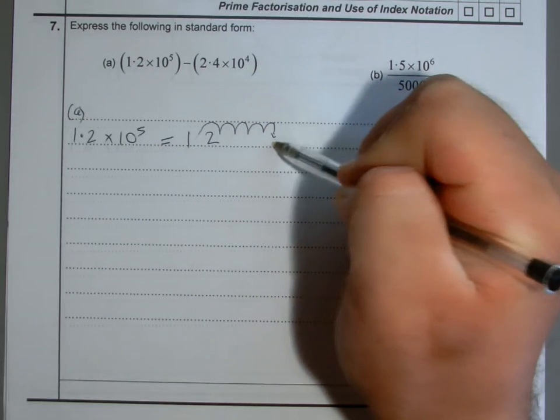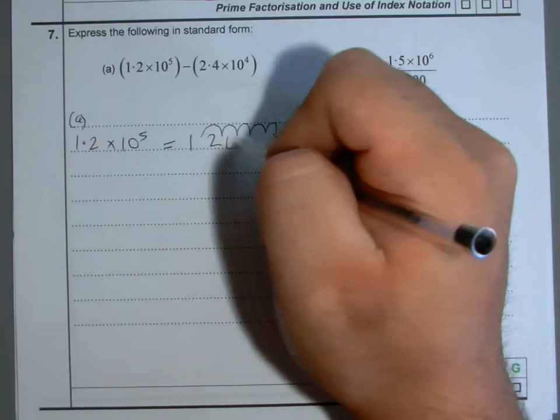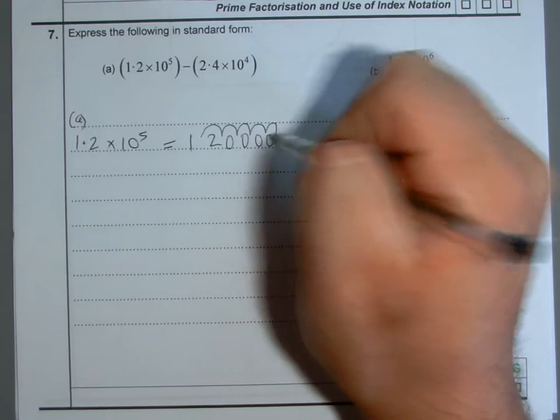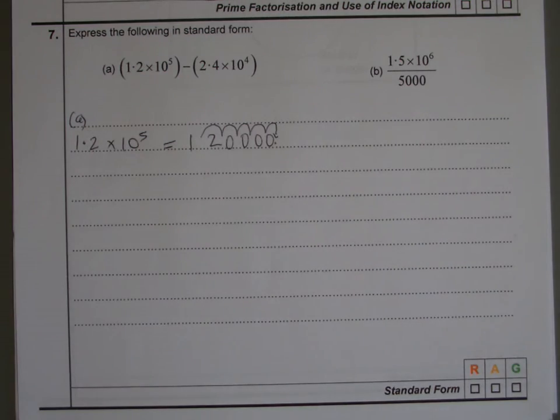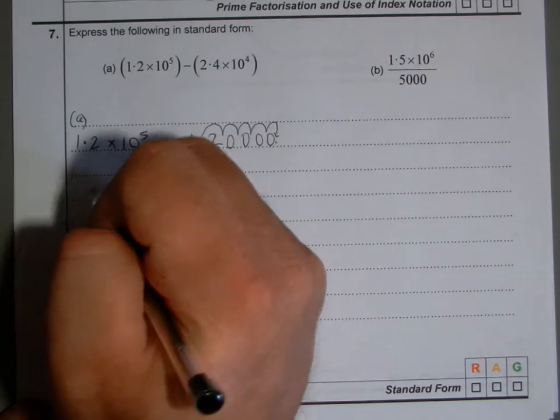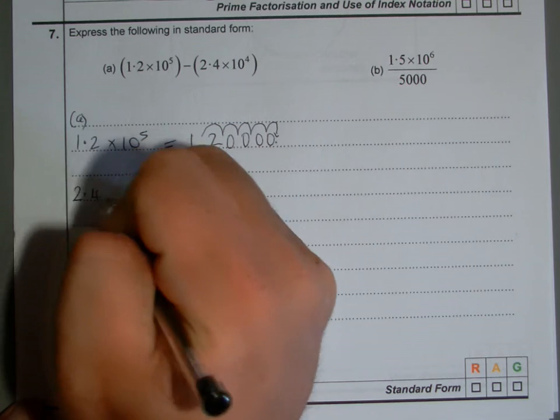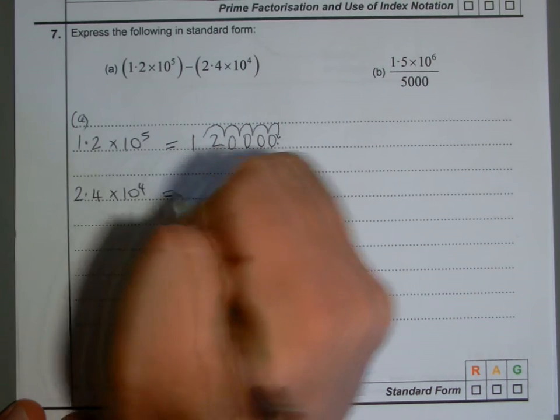Five, that's where it's going to go. I fill these gaps up with zeros, so I've got 120,000. Do the same for the next number: 2.4 times 10 to the power 4.